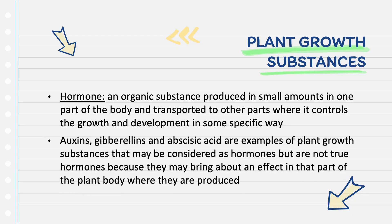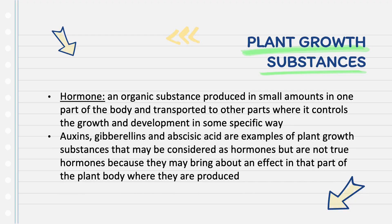Auxins, gibberellins, and abscisic acid are examples of plant growth substances that may be considered as hormones, but are not true hormones because they may bring about an effect in that part of the plant body where they are produced.